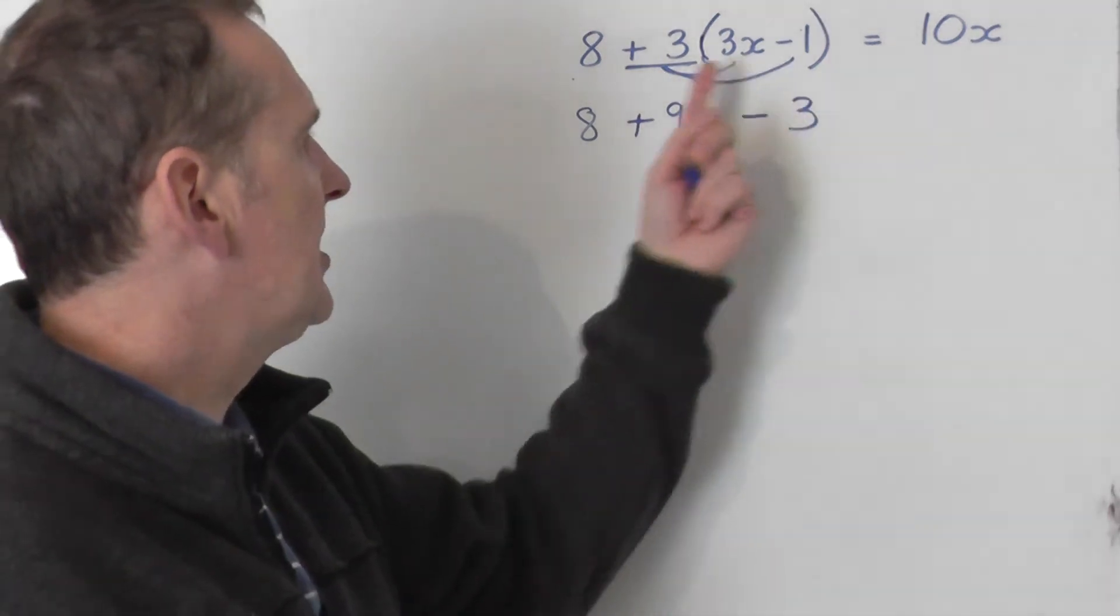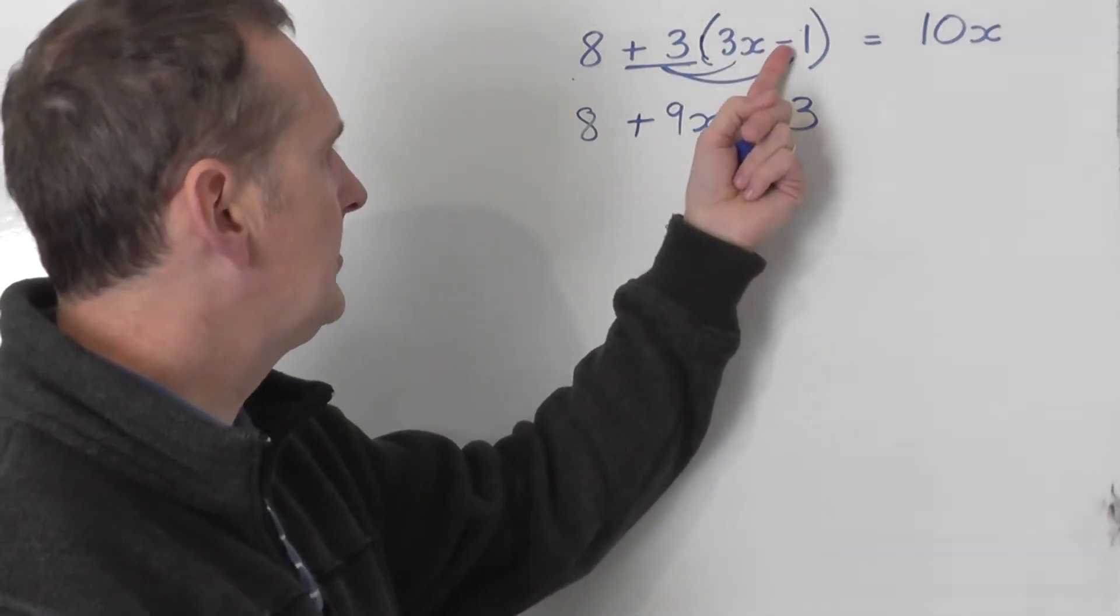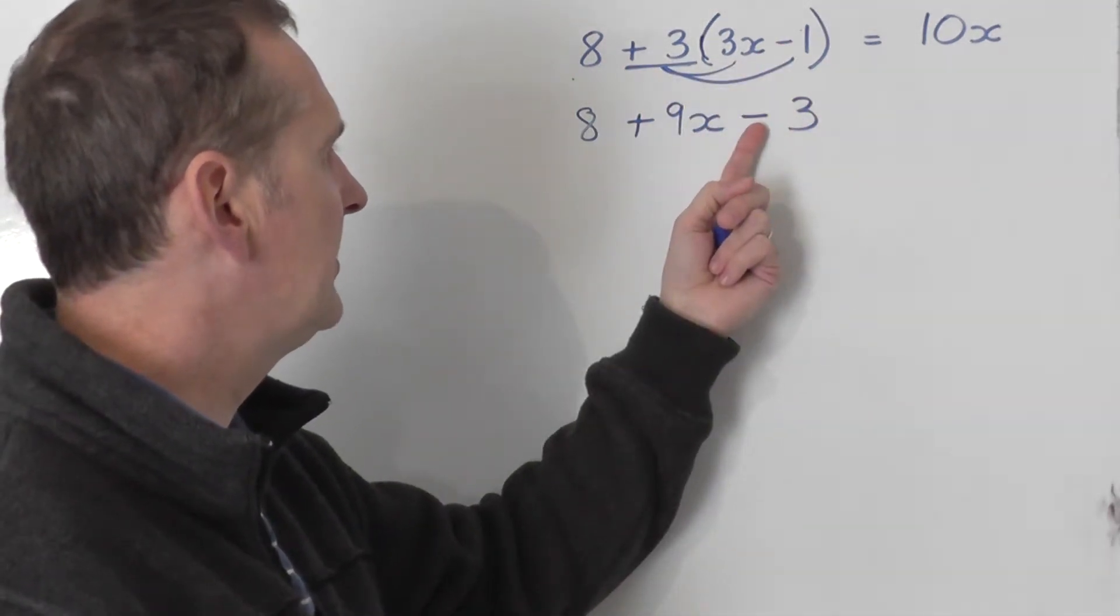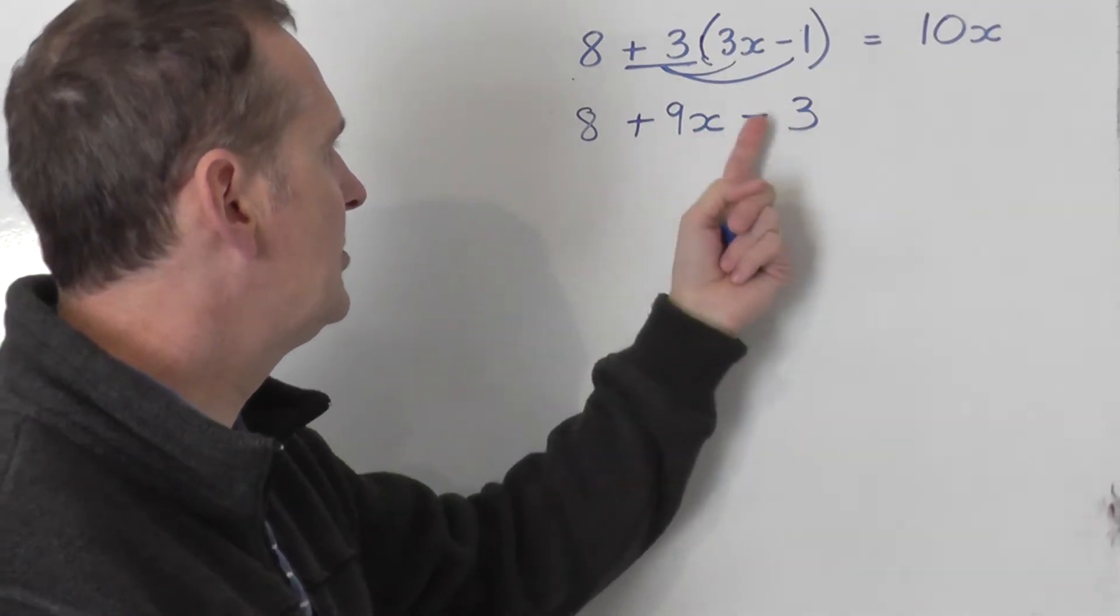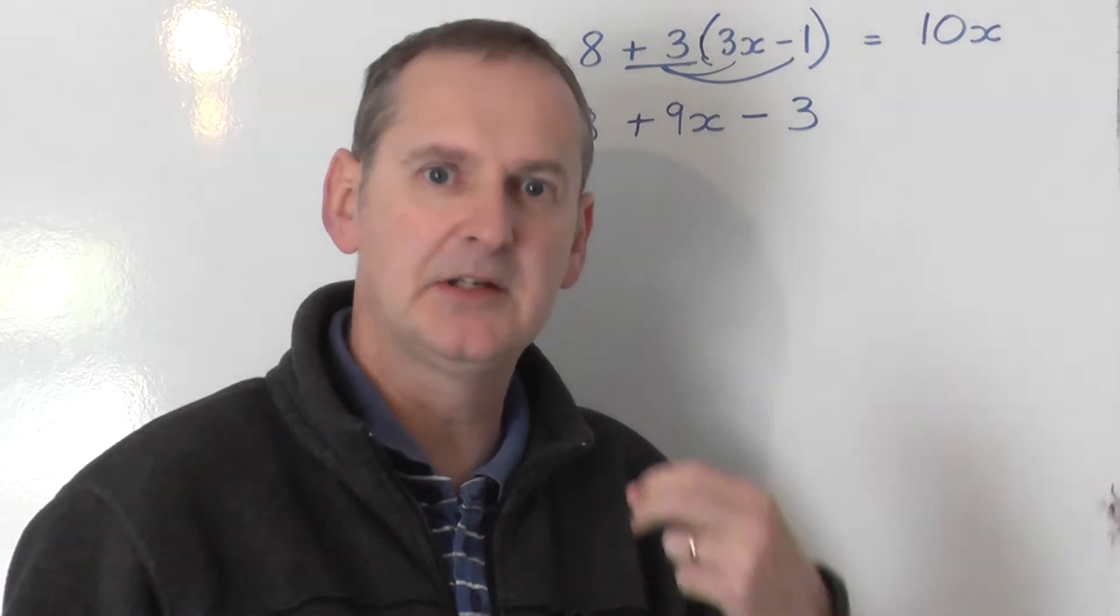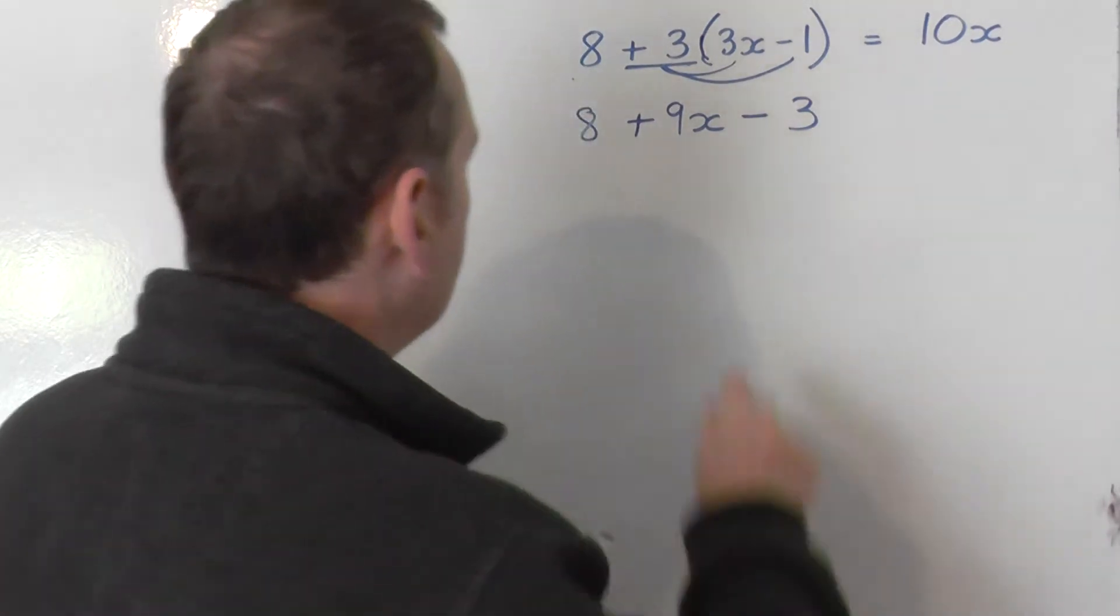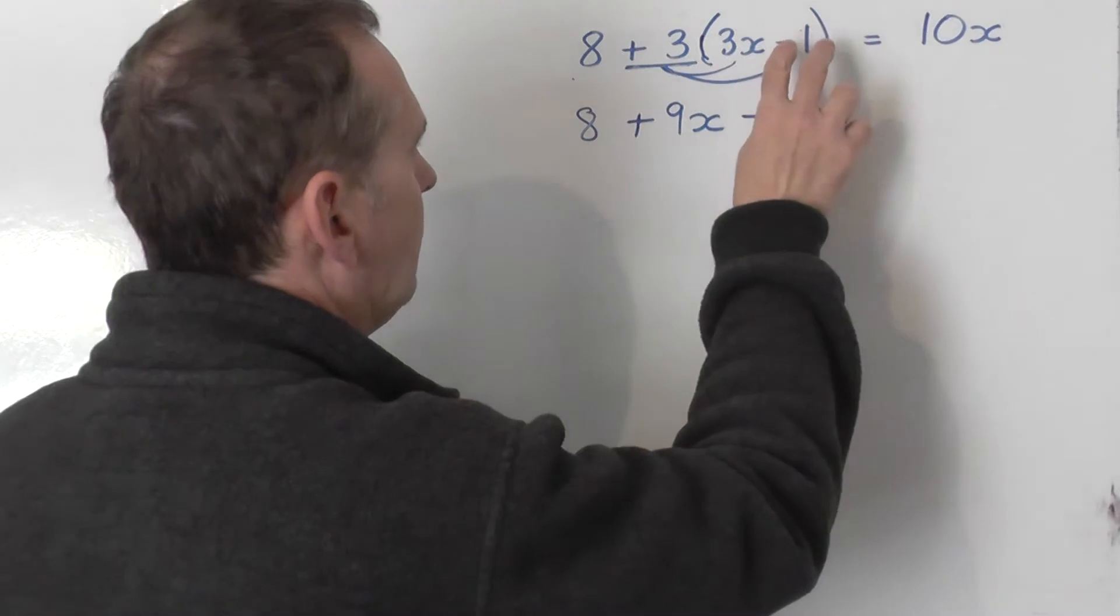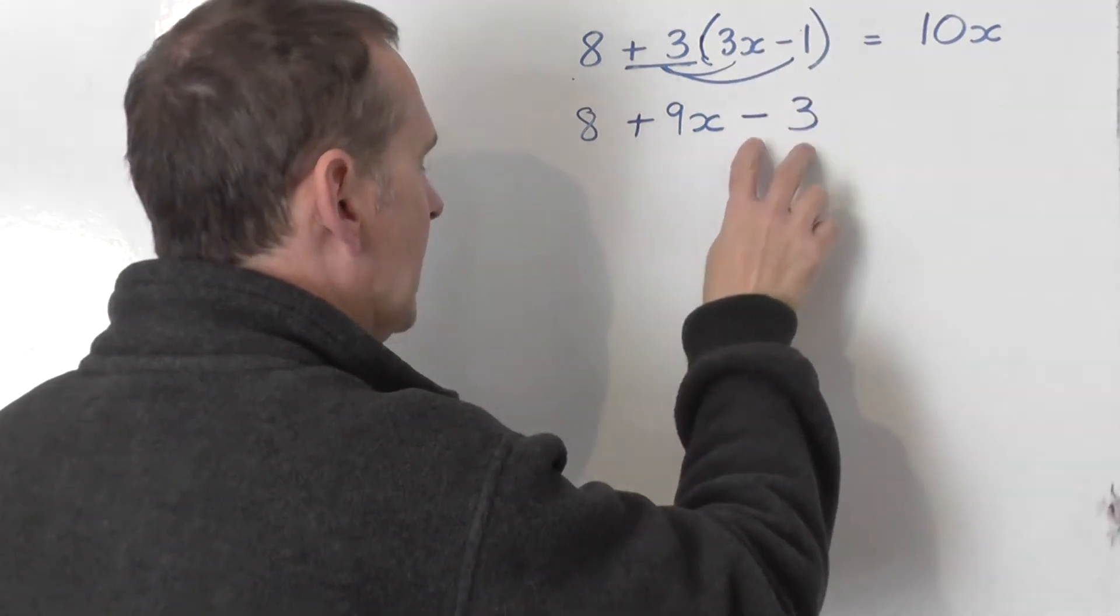Now it is true to say in this example that there's a minus in the bracket and there's a minus here for this second term of the expansion. But I still would suggest to you that you proceed to expand it like I did then.